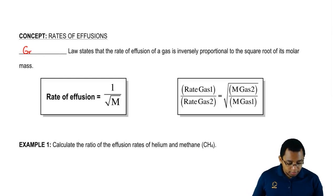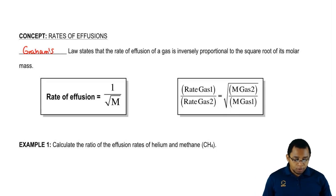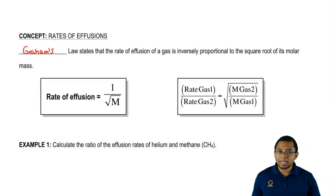Here we're going to say Graham's Law states that the rate of effusion of a gas is inversely proportional to the square root of its molar mass.